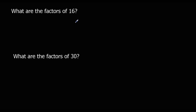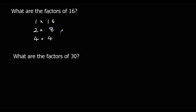So the factors of 16 — the numbers that multiply together to make 16. I can do 1 times 16, or it's in the 2 times table: 2 times 8. It's not in the 3 times table, and it is in the 4 times table: 4 times 4. Because we've already got to 4, that means there are no more factors of 16. So the factors of 16 are 1, 2, 4, 8 and 16.